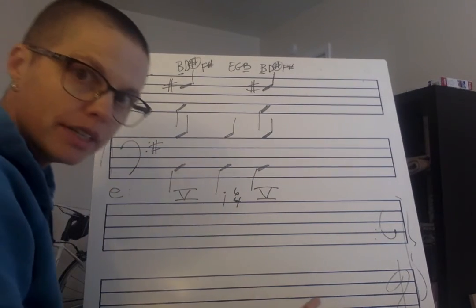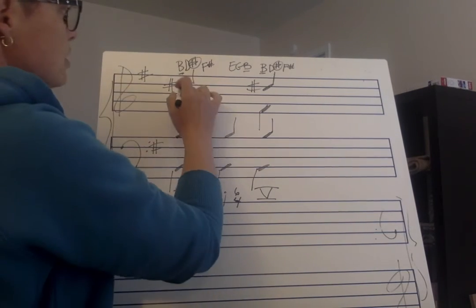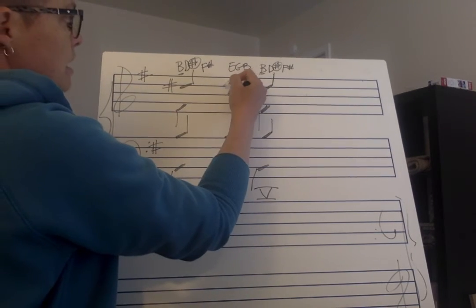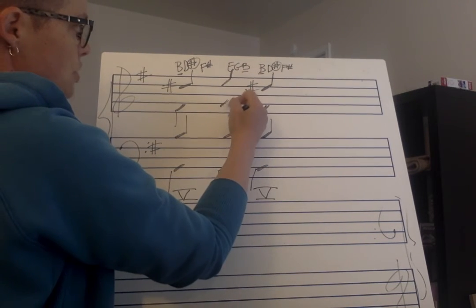Then, because it's a neighboring 6-4, the other two voices are just going to go to the upper neighbor. So D sharp up is going to be an E, that gives us the root of our chord, and F sharp up takes us to G.